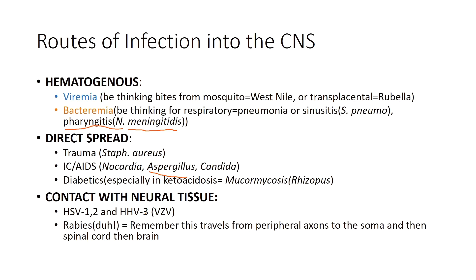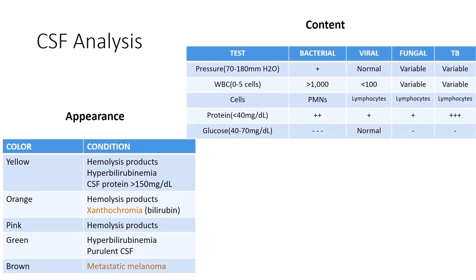Other organisms can gain direct access via neural tissue. For example, if bitten by a rabid dog, the rabies virus can bind directly to cutaneous nerve tissue and travel to the CNS. We'll be discussing that further later.